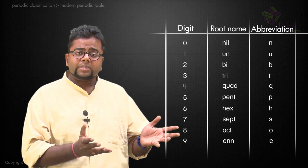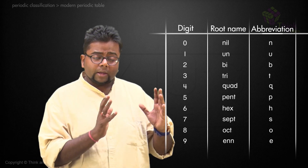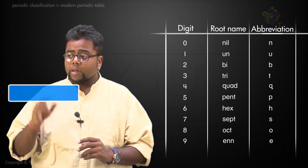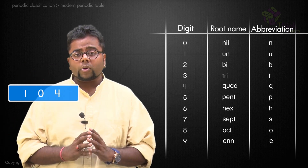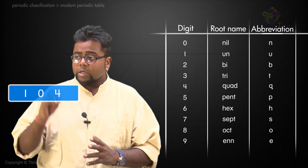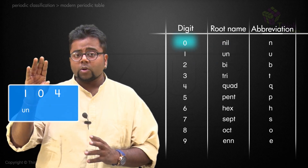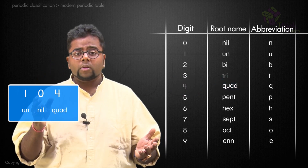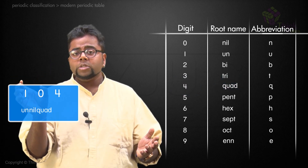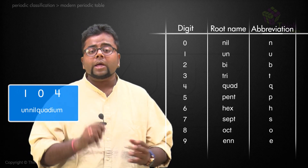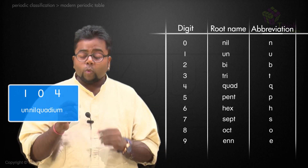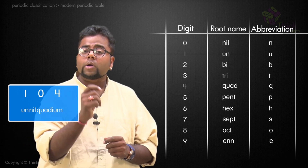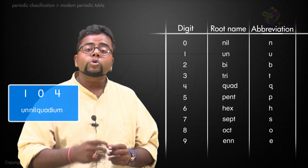Using this list, how do you find out the name? For 104: it is 1, 0, and 4 — so there are three digits. 1 would be 'un', 0 would be 'nil', and 4 would be 'quad'. You just merge all of them and add the word 'ium' after that. Whenever 'ium' is added — whichever element has the word 'ium' at the end — those are supposed to be metals.